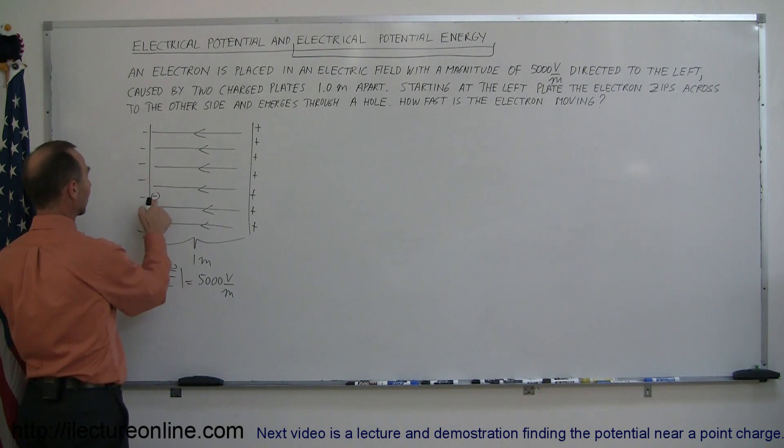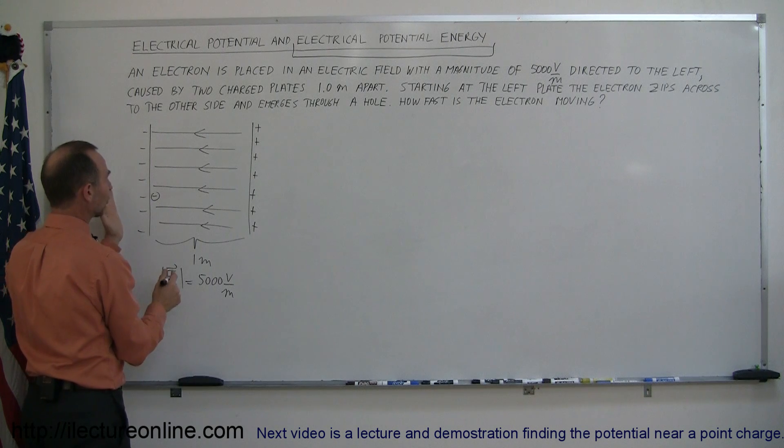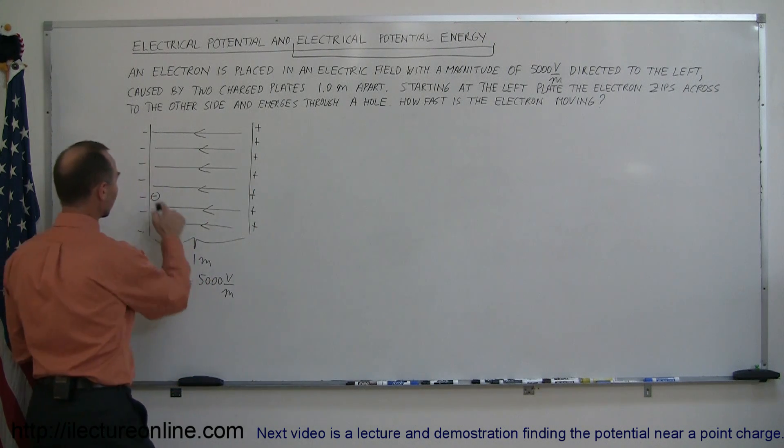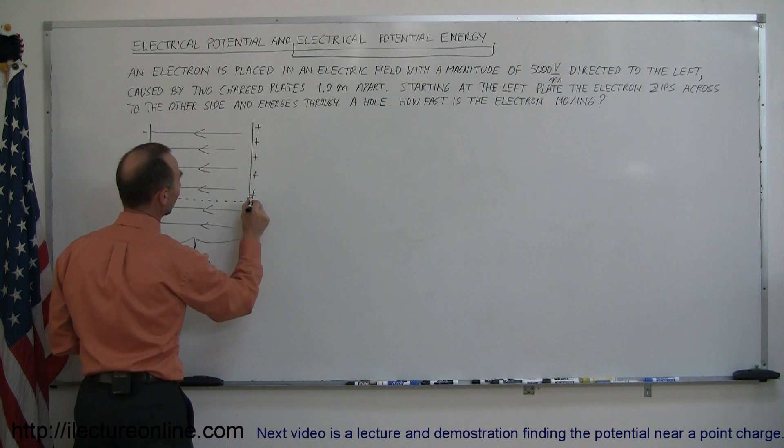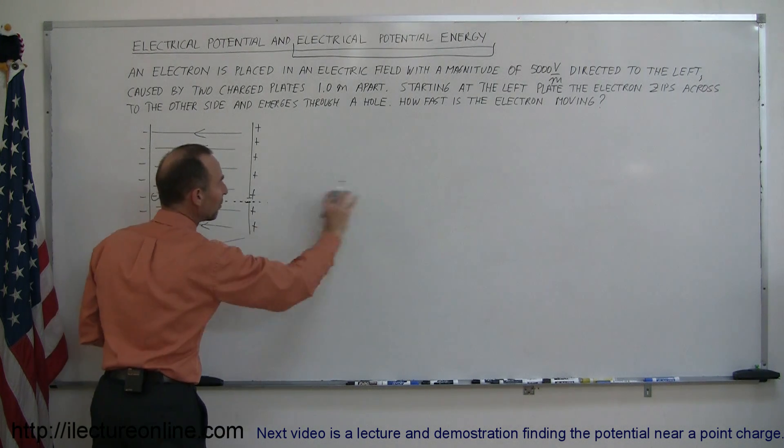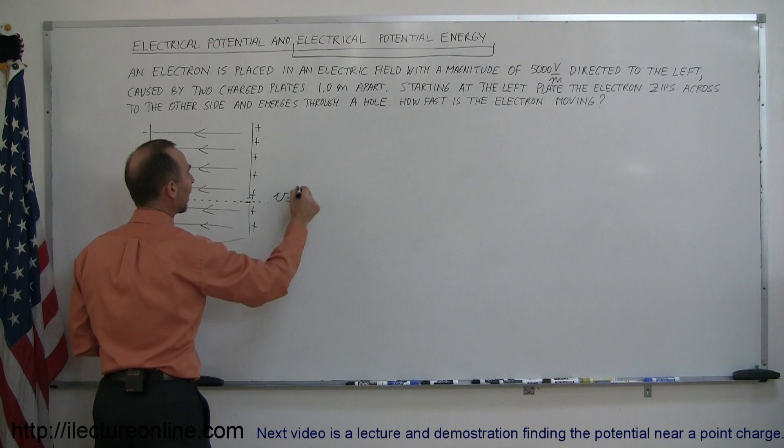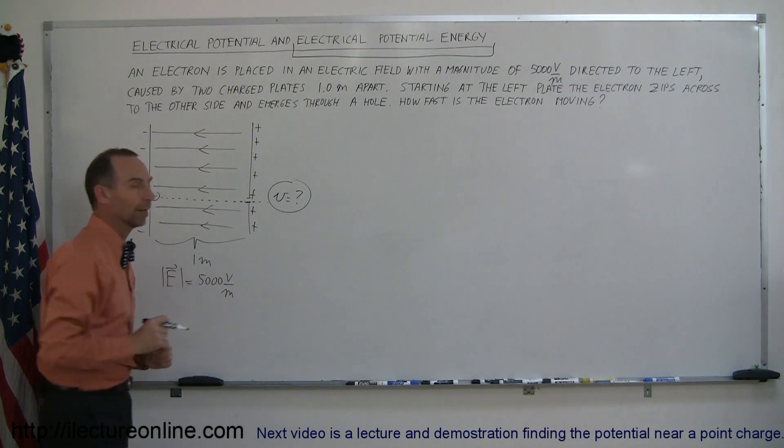And so you can see then that this electron would be repelled by these negative charges and attracted by the positive charges. So it'll zip across this space and then if we make a little hole in the plate the electron would zip across, accelerate, and once it leaves the electric field it would then be moving at a constant speed and the question is how fast will it be moving when it gets there.